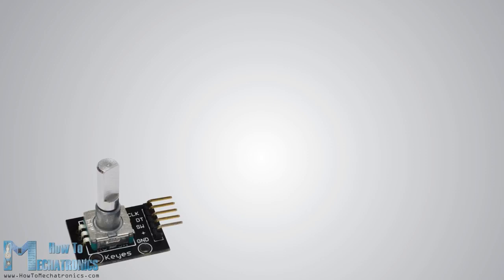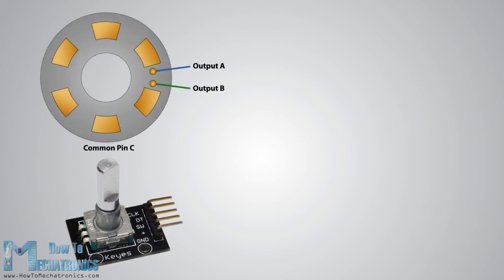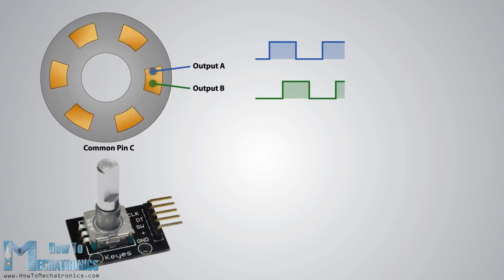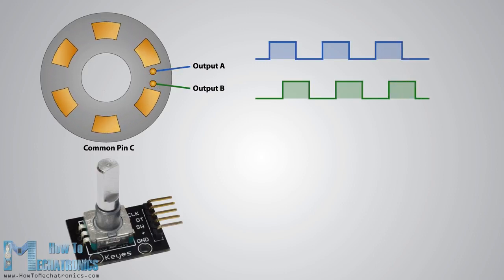Here's how the square wave pulses are generated. The encoder has a disk with evenly spaced contact zones that are connected to the common pin C and two other separate contact pins A and B as illustrated. Now, when the disk starts rotating step by step, the pins A and B will start making contact with the common pin and the two square wave output signals will be generated accordingly.